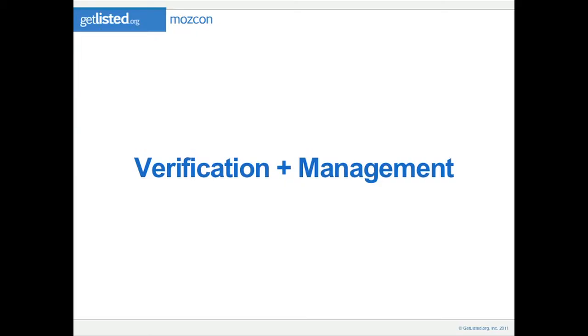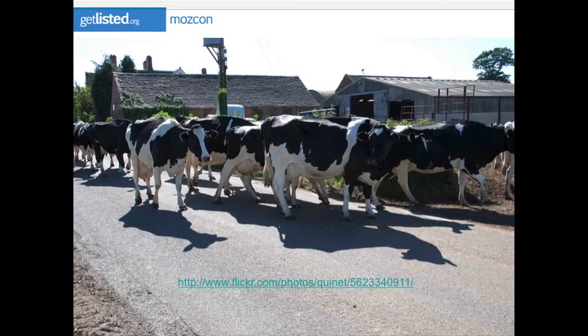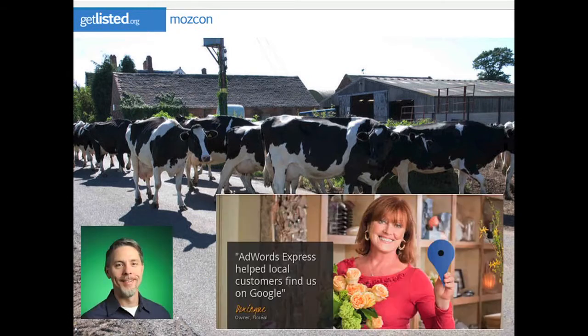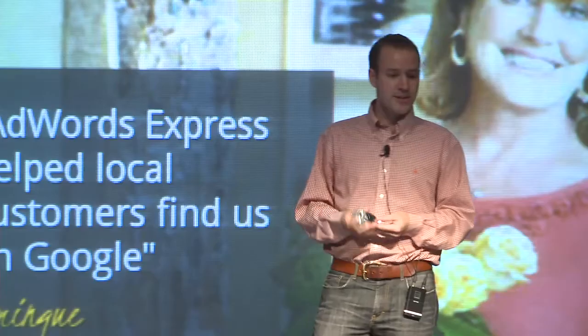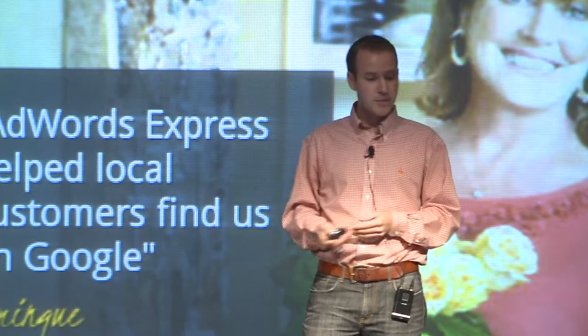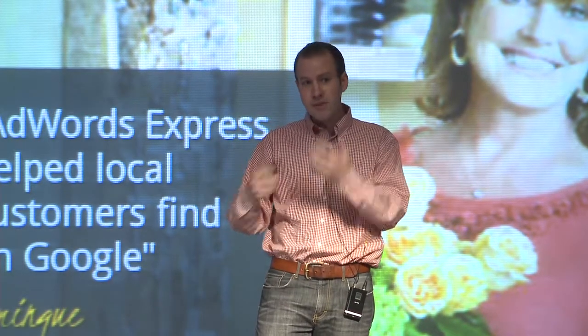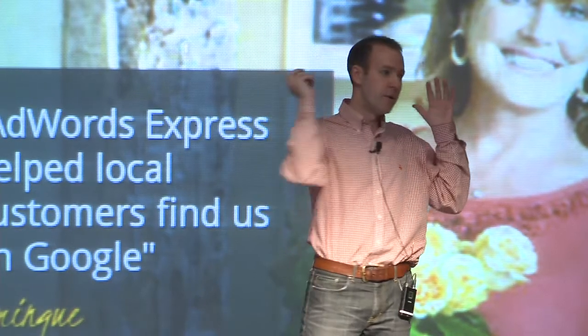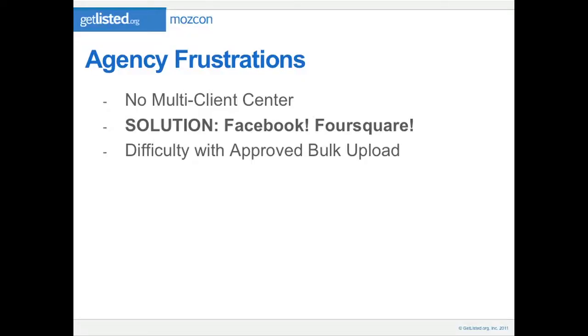Starting with verification and management: I don't know how many times people have asked me when Google is going to come out with a multi-client center to manage a bunch of different Places accounts at once. If you're an agency, we've been waiting a long time and you're going to keep waiting. Jeff Huber has just been named as the local product monetizer at Google, and they just rolled out AdWords Express to replace Boost, which signals they're moving toward allowing agencies to manage a lot of accounts — but it really hasn't been their focus.